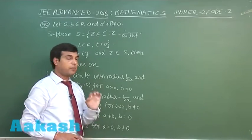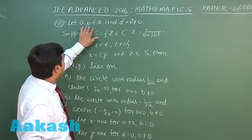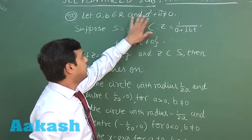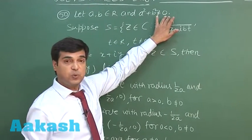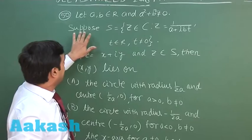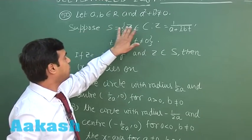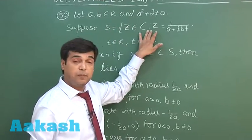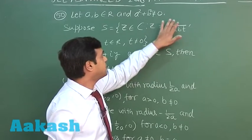Let's talk about question number 50. Let a and b are real numbers and a²+b² ≠ 0. Suppose set S = {z ∈ ℂ : z = 1/(a+ibt), t ∈ ℝ, t ≠ 0}.